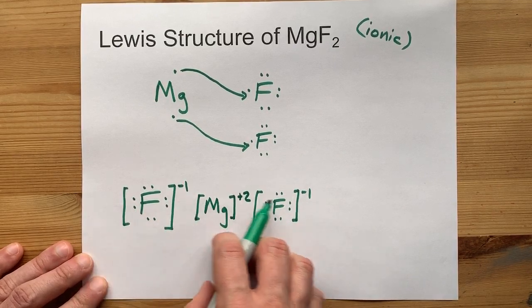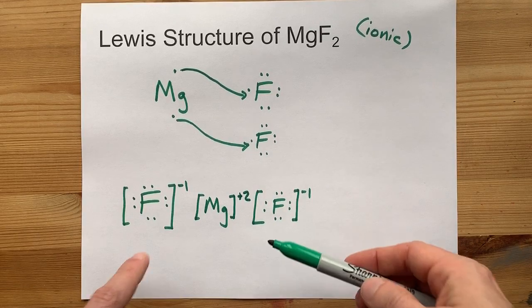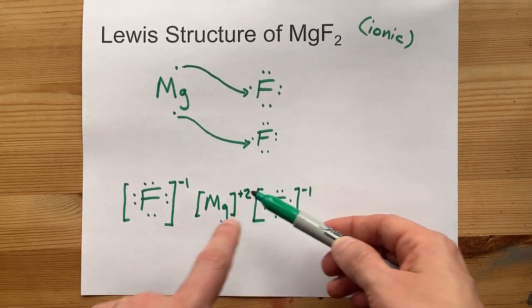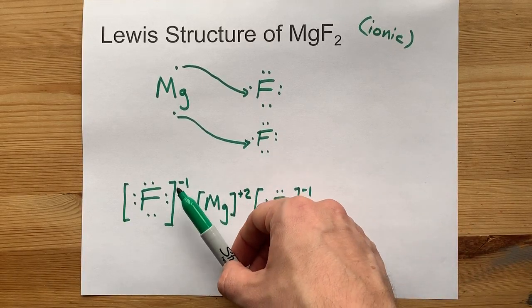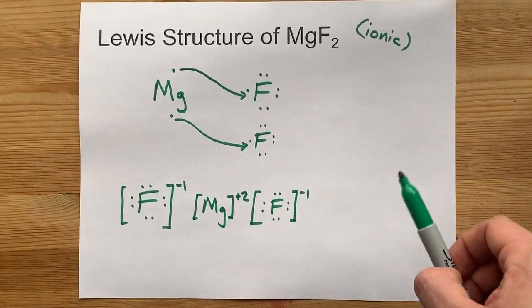This is my preferred Lewis structure for magnesium fluoride. It shows the 2 F's with the minus 1 charges, and the Mg with a plus 2 charge in between. The attraction between the negative ions and the positive ions is what makes it an ionic compound.